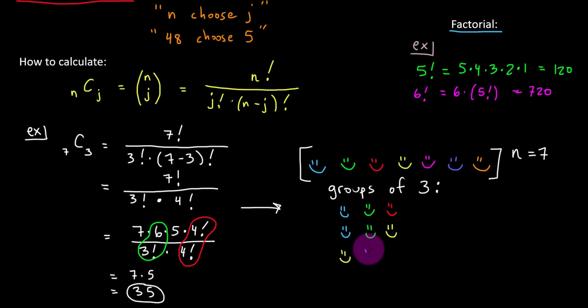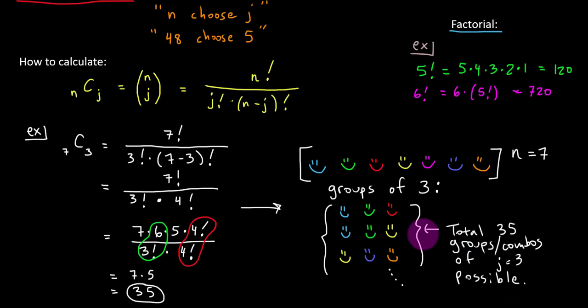Or how about yellow, blue, dark blue, and orange. That would be another group. And so on and so on. So here I have identified 3 of these possible groups of 3, but there would be a total of 35 groups, or I should say combinations, of 3 possible. So that's what a combination is. It's the number of unique groups that are possible from a larger group of a specified size.